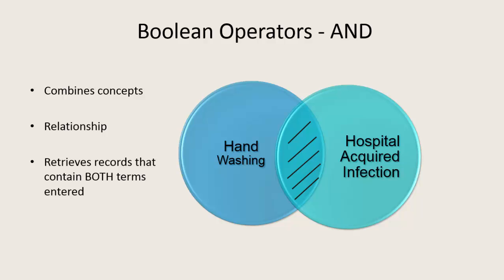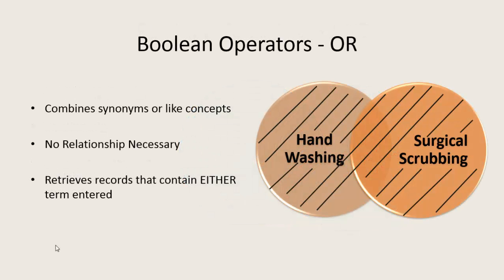The Boolean operator AND is used anytime that you want to make a direct relationship between two terms. The Boolean operator OR, on the other hand, does not make direct relationships between terms. Many times you're going to use OR when you're trying to combine synonyms or like concepts, such as alternative terms for describing hand washing — you'd want to OR those together.